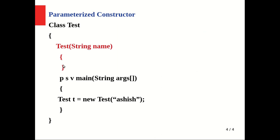Now we are going to see the next type of constructor — the parametric constructor. This is a constructor which the user defines with some parameters. For example, we have a class Test where the user creates a constructor and passes a parameter with the String name. Inside the main method we create an object and pass the string 'ashish', which goes to the String name parameter.